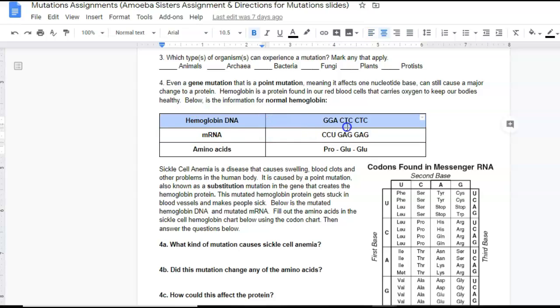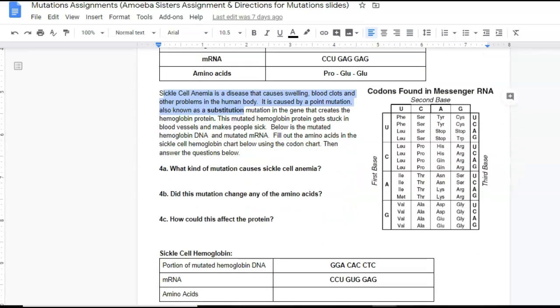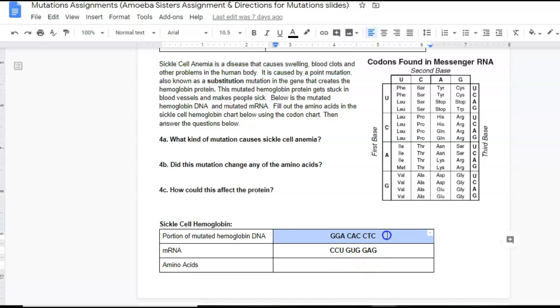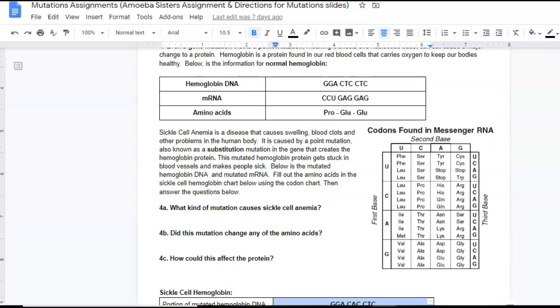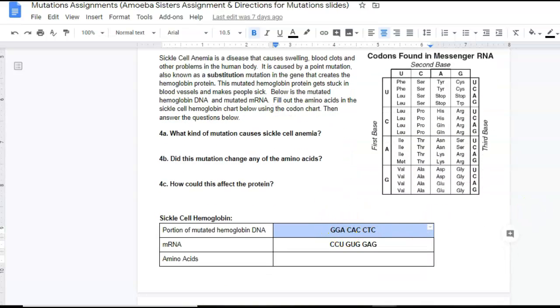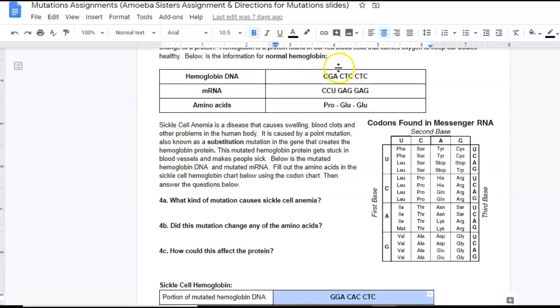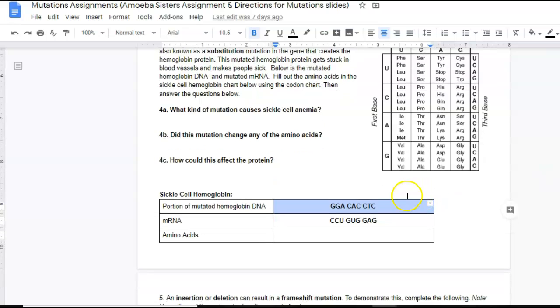So this is DNA for a protein that's found in your red blood cells. Here's normal DNA, here's normal mRNA, and here's a normal amino acid chain. But in sickle cell anemia, there is a mutation, a substitution mutation, which means one of these letters is changed for a different letter. So we can figure out what happens. What I asked you to do is look at the DNA and what's different. So we can compare. Here the DNA says GGA in the normal DNA, and GGA in the mutated DNA. So that's the same. In the normal DNA, we have CTC. In the DNA down here, we have CAC. So right here, this A, this A was mutated. It's a different letter.